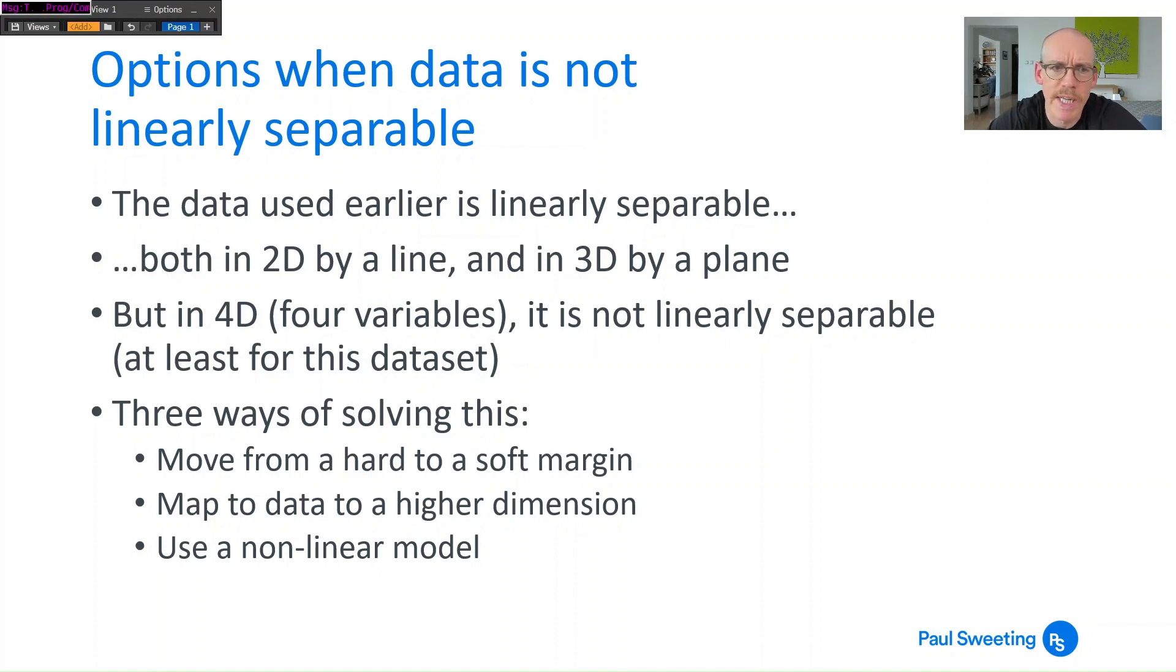Now that's fine if the data is linearly separable but in the real world it is often not. If you for example this data set I've got here, if you move to four dimensions to four variables it is no longer linearly separable with this data set and there's a number of ways that you can deal with this. You can soften the approach of that margin so rather than have a hard margin you can move to a soft margin. You can map the data to a higher dimension or you can use a non-linear model and we'll cover all those in some of the forthcoming videos.